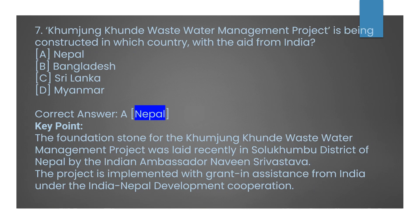Question number seven: the Khumjung Khande Wastewater Management Project is being constructed in which country with aid from India? Option A: Nepal. Option B: Bangladesh. Option C: Sri Lanka. Option D: Myanmar. The correct answer is Option A, Nepal. The foundation stone for the Khumjung Khande Wastewater Management Project was recently laid in the Solu-Khumbu District of Nepal by Indian Ambassador Naveen Srivastava. The project is implemented with grant-in-aid assistance from India under the India-Nepal Development Cooperation.